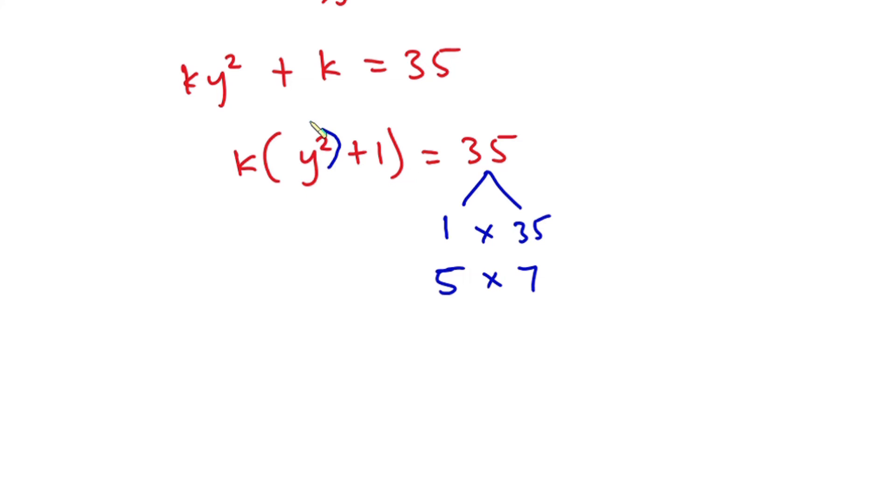This y² is a squared number then plus 1, so we look in these pairs which of them contains a perfect square then plus 1.